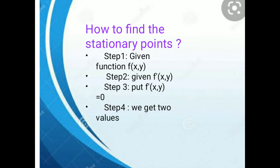Step 2: find the partial derivatives — ∂f/∂x, ∂f/∂y, ∂²f/∂x², ∂²f/∂y², and ∂²f/∂x∂y. Step 3: set ∂f/∂x = 0 and ∂f/∂y = 0. We get two values — those are the stationary points. Now let's solve the problem with the given function.